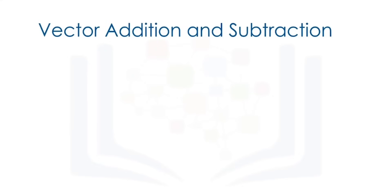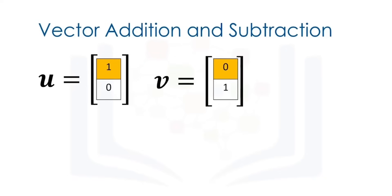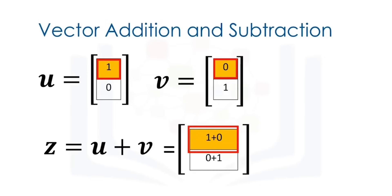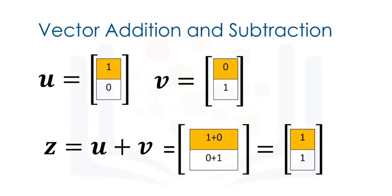Vector addition is a widely used operation in data science. Consider the vector u with two elements. Similarly, consider the vector v with two components. In vector addition, we create a new vector z. The first component of z is the addition of the first components of vectors u and v. Similarly, the second component is the sum of the second components of u and v. This new vector z is a linear combination of vectors u and v.